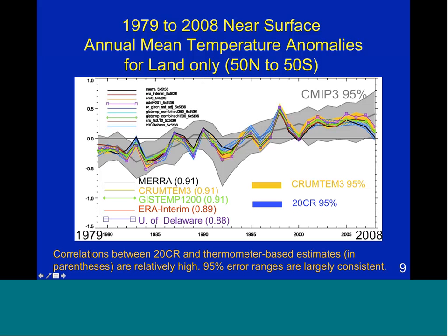It's also interesting to note that the 95% error ranges between CRU and the 20th century reanalysis are fairly consistent throughout the period. In gray, we've indicated the 95% range of the CMIP-3 ensemble — most of the time all estimates stay within that range, with a few exceptions such as the El Niño of 1997-98.